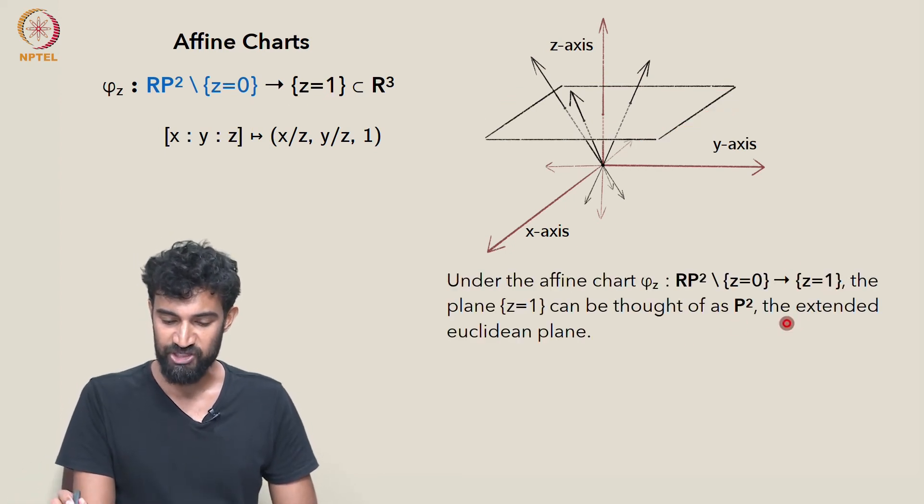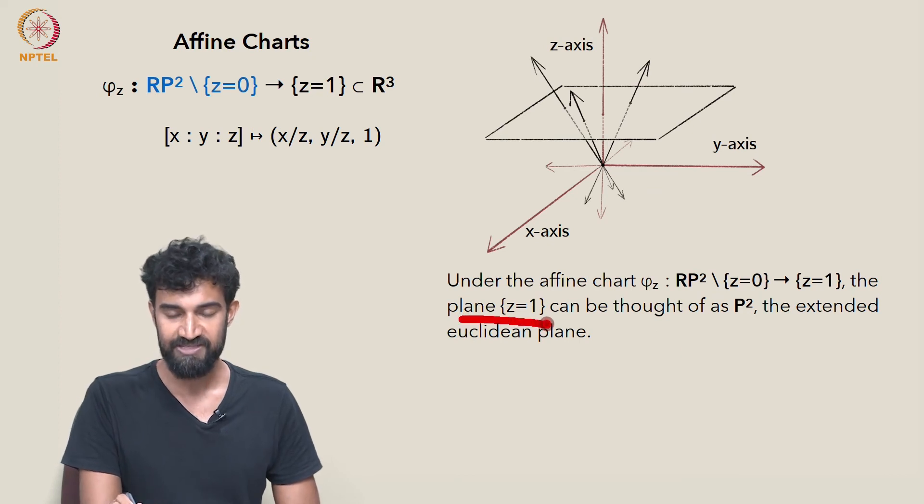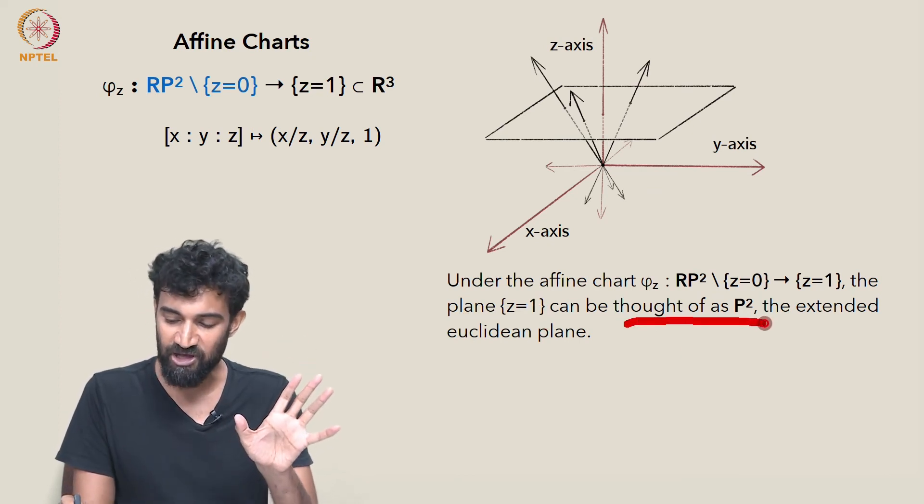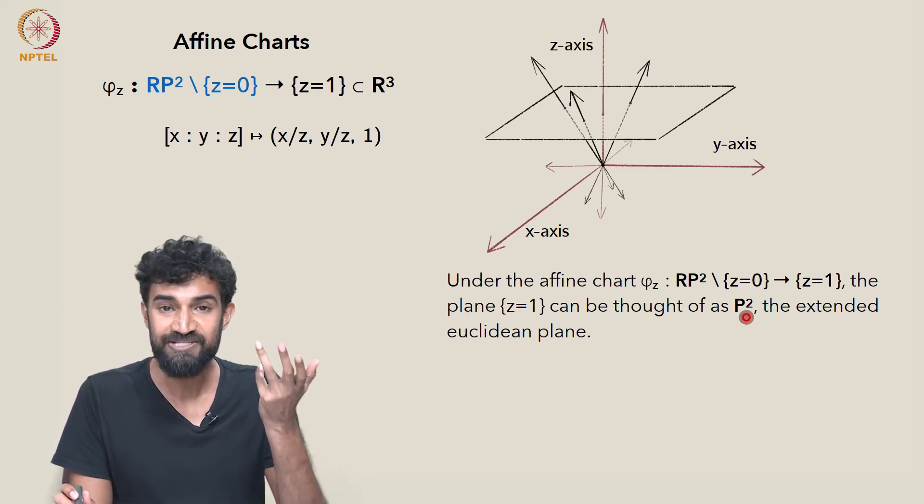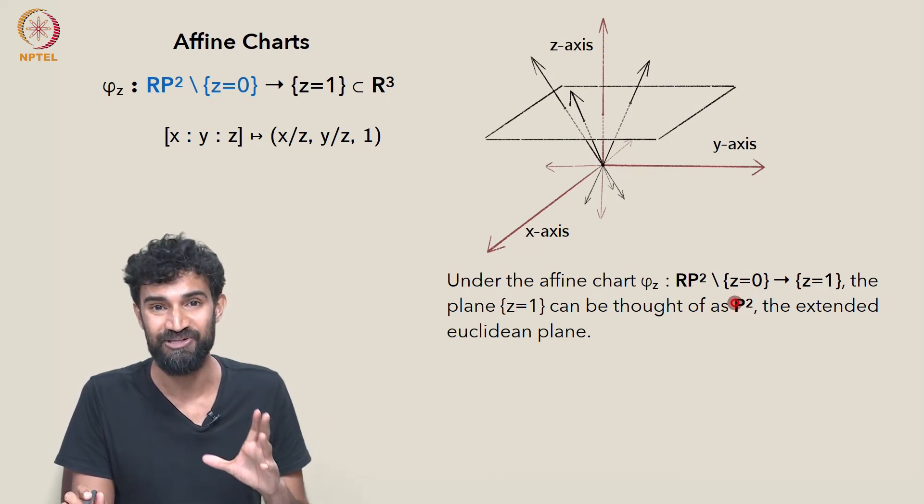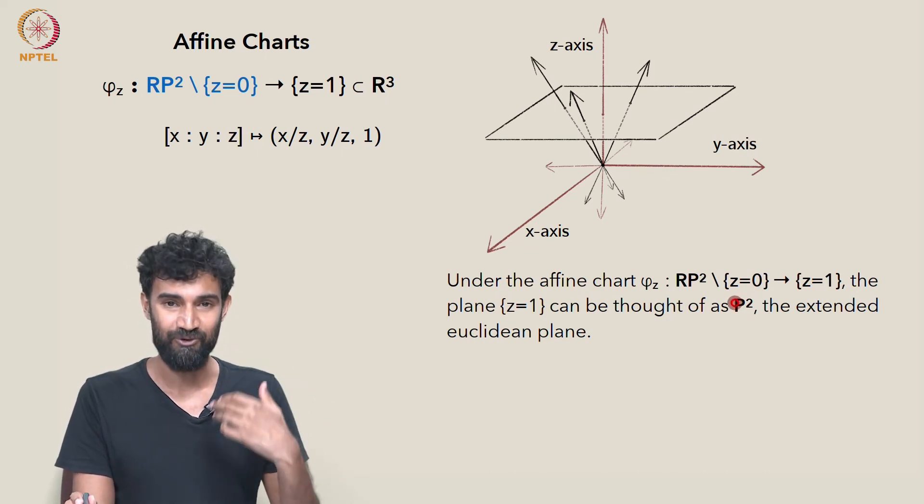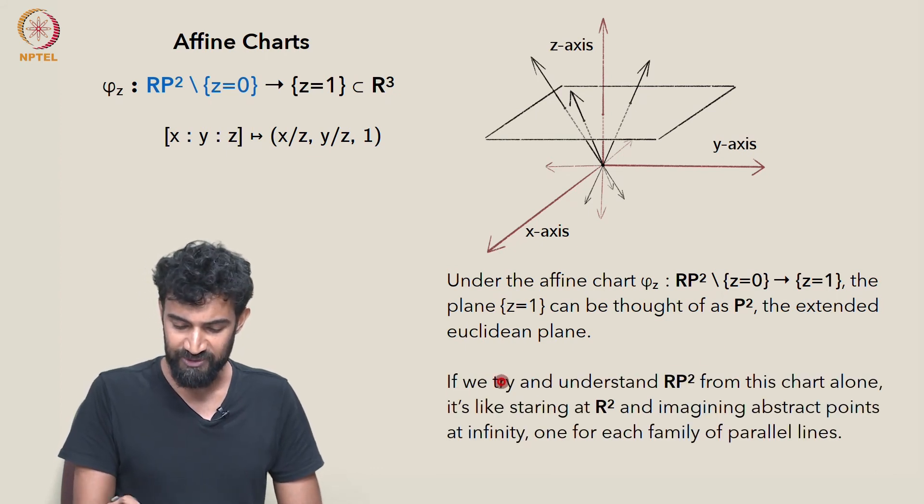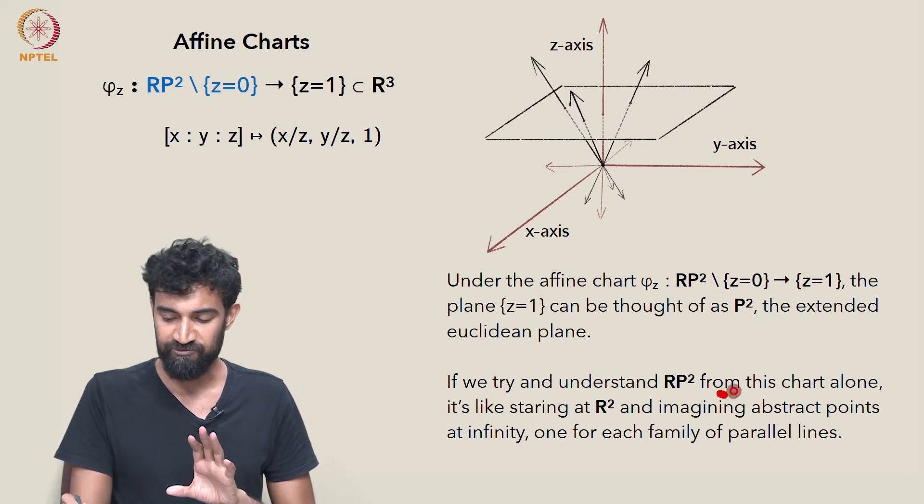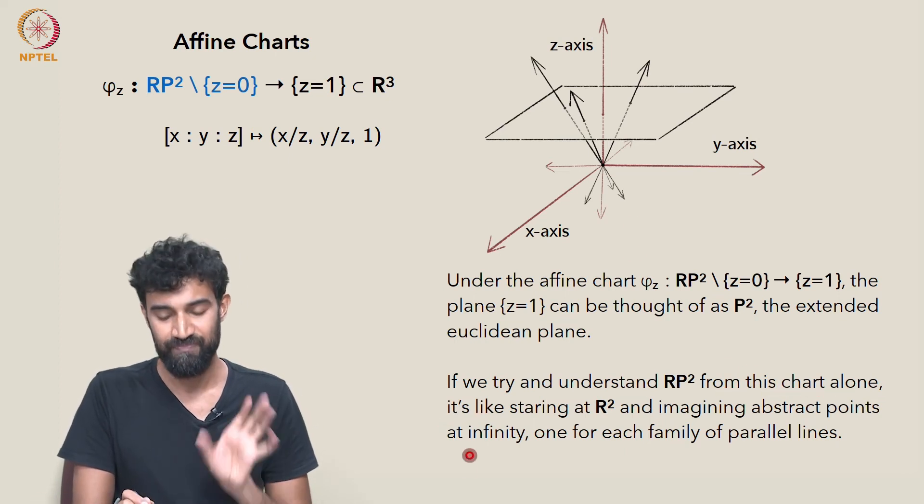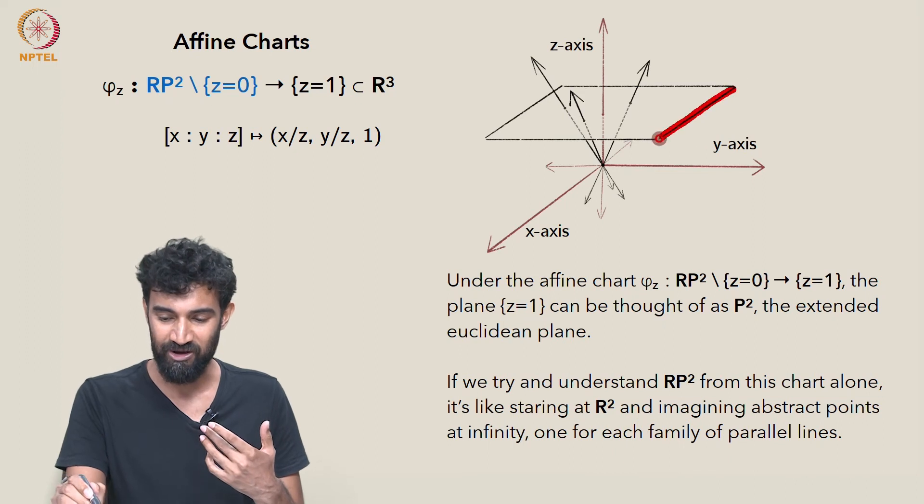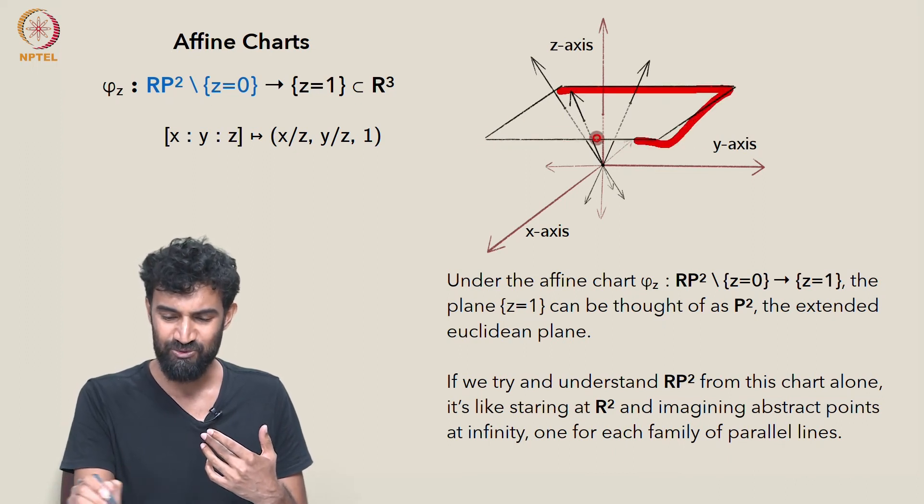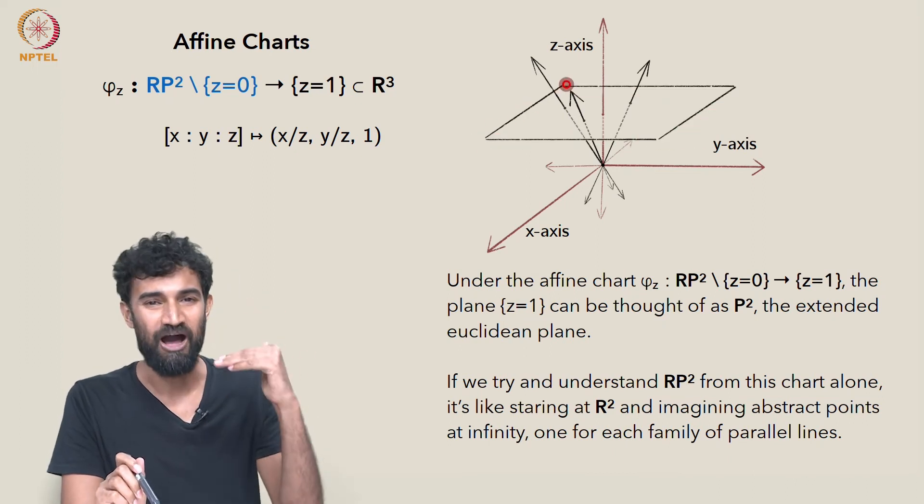Now, under this affine chart, the plane z equals 1 can actually be thought of as P², as the extended Euclidean plane that we've been working with for a long time now. And really, if we try and understand RP² from this chart alone, then it's a lot like staring at R², because the plane z equals 1 is really just a copy of R².